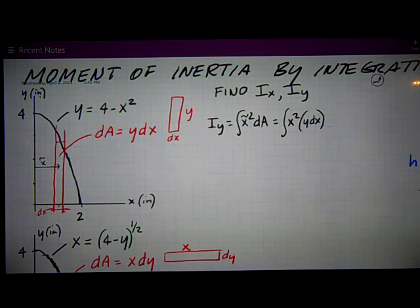So that's equal to the integral of x squared, in our case, from 0 to 2, we're integrating along the x-axis. y is equal to this formula, 4 minus x squared, parentheses, dx.